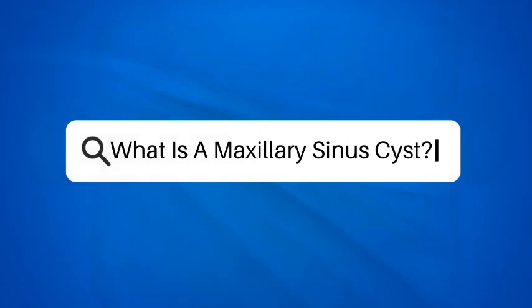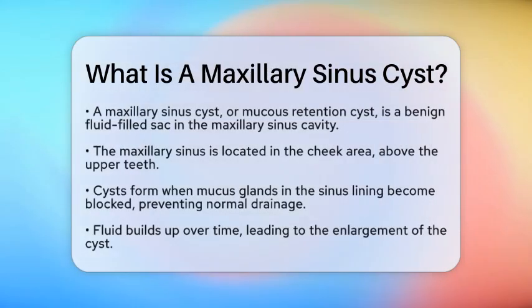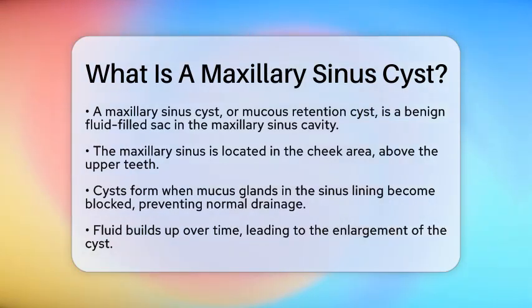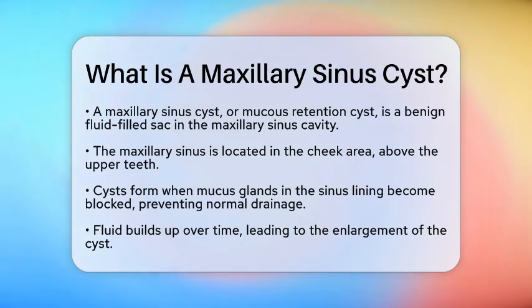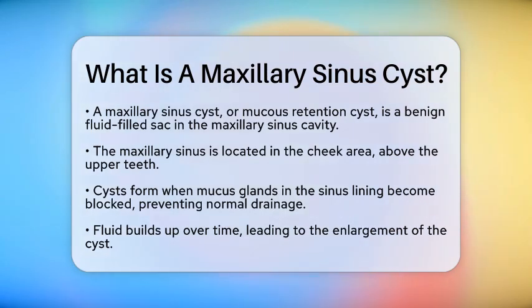What is a maxillary sinus cyst? Have you ever wondered what happens when the tiny mucus glands in your sinuses get blocked? This is where a maxillary sinus cyst comes into play. A maxillary sinus cyst, also known as a mucus retention cyst, is a benign, fluid-filled sac that forms in the maxillary sinus cavity. This cavity is located in your cheek area, just above your upper teeth.